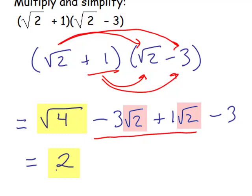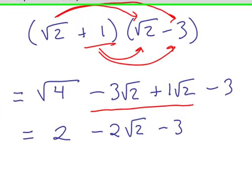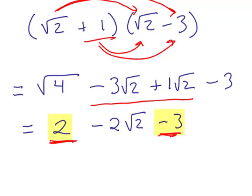These two middle terms, negative 3 radical 2 plus 1 radical 2 is minus 2 radical 2. And now the integers 2 and negative 3 can combine to give us negative 1 minus 2 radical 2.